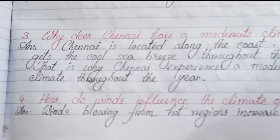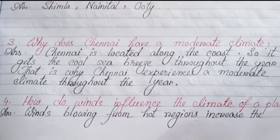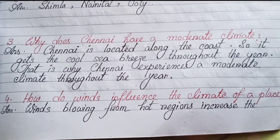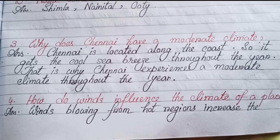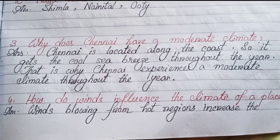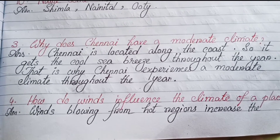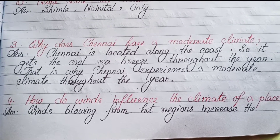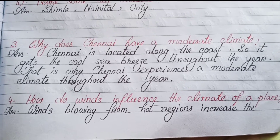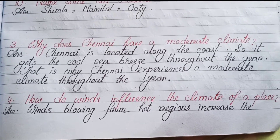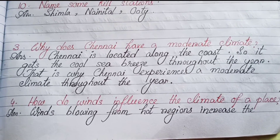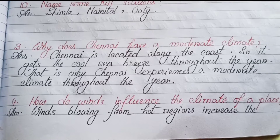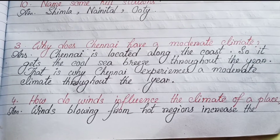Number three: Why does Chennai have a moderate climate? Chennai is located along the coast, so it gets the cool sea breeze throughout the year. That is why Chennai experiences a moderate climate throughout the year.